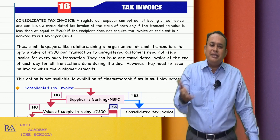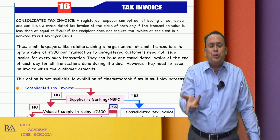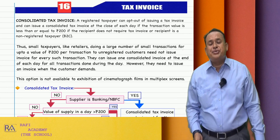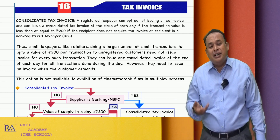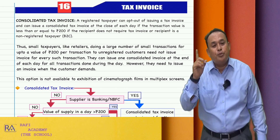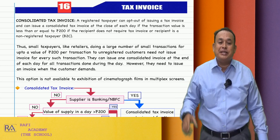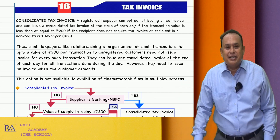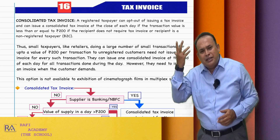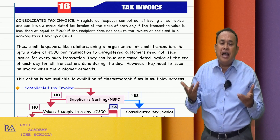Per transaction, I am dealing with them for only 20 rupees, 30 rupees maximum — less than or equal to 200 rupees per transaction to my customers, who are unregistered persons. Such transactions occur throughout the day. In a day, I may be supplying thousands of customers who come to my shop for tea.